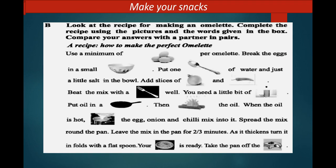When the oil is hot, pour the egg, onion and chili mix into it. Spread the mix around the pan. Leave the mix in the pan for two or three minutes. As it thickens, turn it in folds with a flat spoon. Your omelette is ready. Take the pan off the stove. I think you have understood the recipe and making instructions.